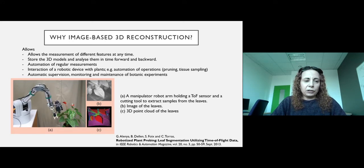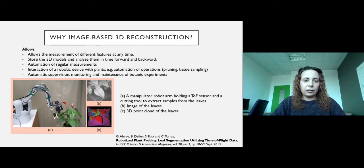Image-based 3D reconstruction also allows the measurement and storage of 3D models, which we can later analyze over time. Or we can automate regular measurements while tracking the growth of a plant. It also allows interaction of a robotic device with plants — for example, automating operations like pruning or tissue sampling — and allows automatic supervision, monitoring, and maintenance of botanic experiments.